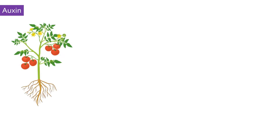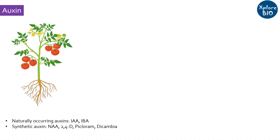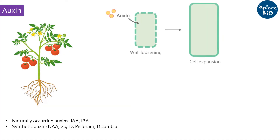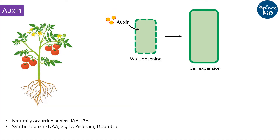The first one is auxin. It is a growth promoting hormone that facilitates cell wall loosening, increases the cell wall plasticity, and helps in cell division and expansion. Its major role is in root growth promotion.